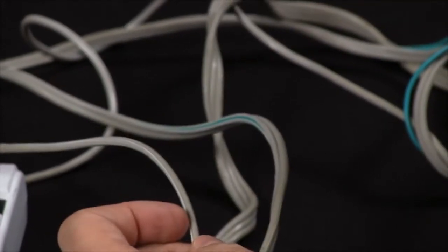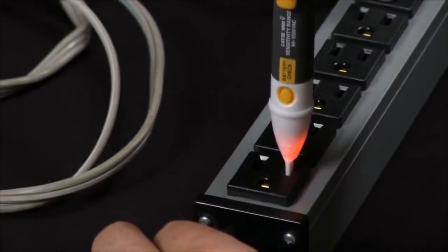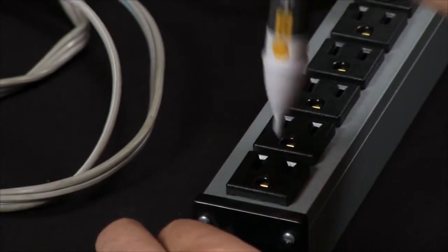You can do the same test with a power strip. Again, place the 2AC into the hot side and then place it into the neutral.